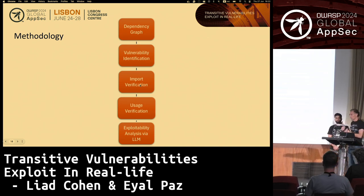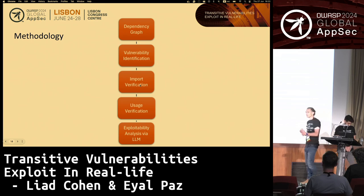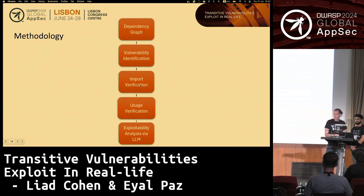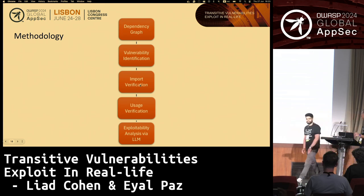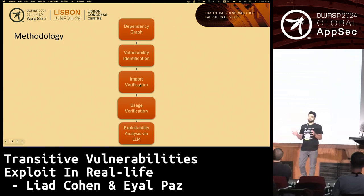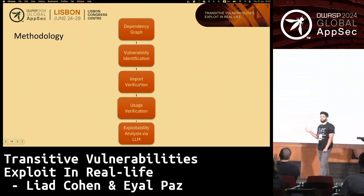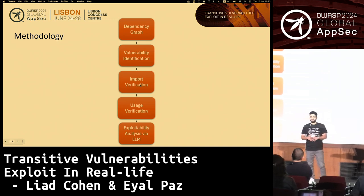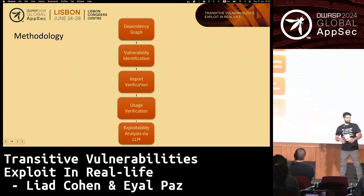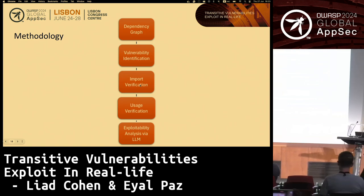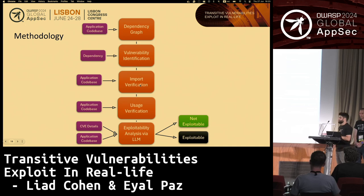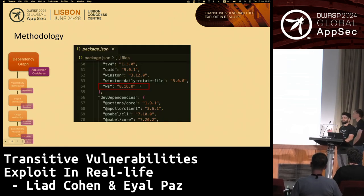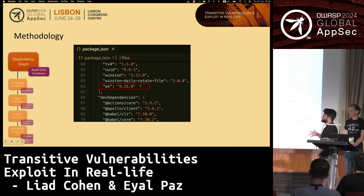To make it scale, we cannot do this triage manually for every vulnerability in our research. This is why we built this methodology. We are now going to attack this problem in a scalable way — we cannot manually look at thousands of CVEs and do all of this triage process. We have a five-step methodology. The first step is building a dependency graph.